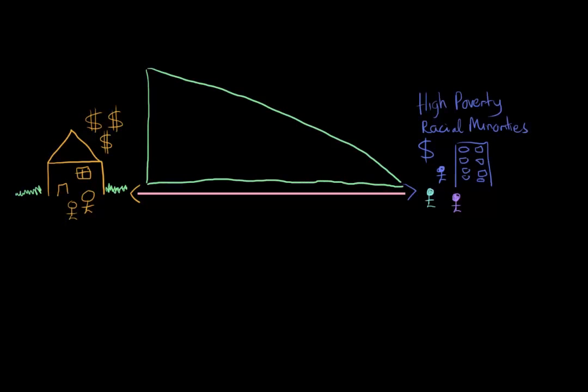Using this triangle, this is supposed to represent environmental benefits. One of the things we can see is that the wealthier part of society has much higher benefits than the high poverty and racial minority part of society. Those benefits include things like parks, bike paths, and other green spaces. So one part of society seems to be getting a lot of benefit while another part doesn't get as much benefit.